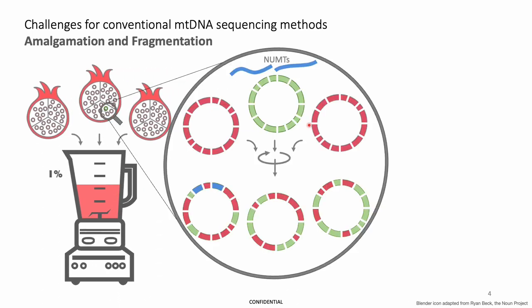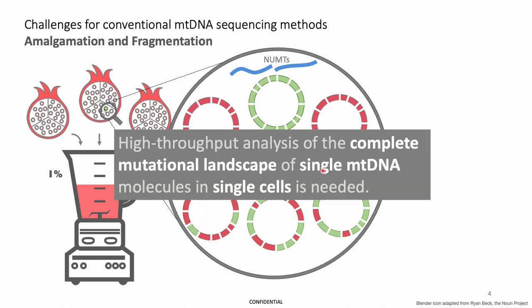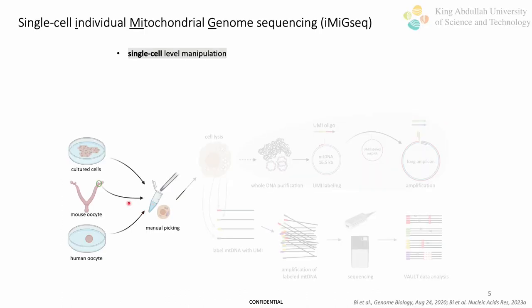Short-read sequencing also fragments mtDNA. It is impossible to determine the true haplotype of individual mtDNA molecules. Therefore, new methods are needed to reveal the true heterogeneity of mtDNA. Most mtDNA isolation methods require many cells and have low yield.